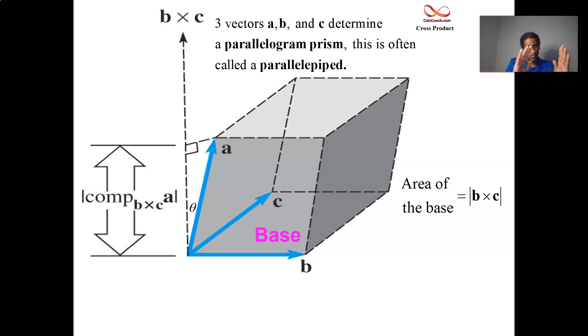Now we have to figure out what the height is. Because it's not a right prism, what we have to do is project. The vector a determines the height. The projection of a onto the cross product between b and c.